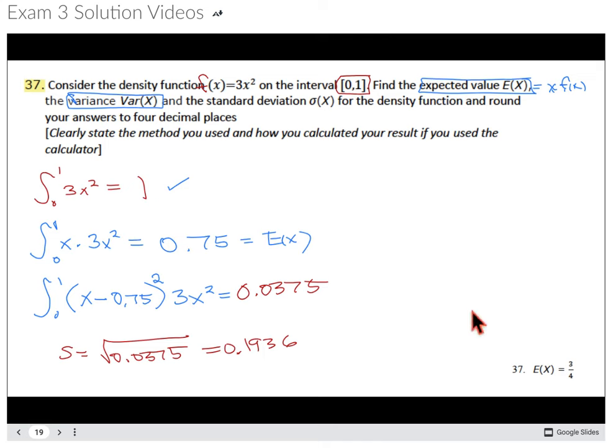And those are the correct answers according to the answer key and according to the methods. Okay, so that's how we are able to get the expected value, variance, and standard deviation when we are given a density function in this form.